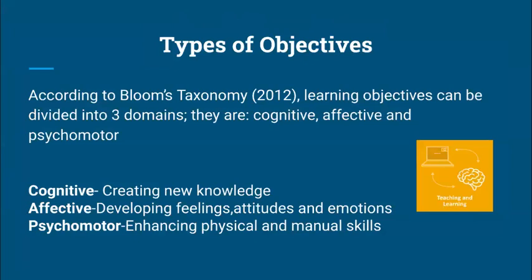According to Bloom's Taxonomy, learning objectives can be divided into three domains: the cognitive, the affective, and the psychomotor. When we talk about cognitive, we talk about the thinking process — anything having to do with knowledge. Affective is where you want students to develop a specific feeling, attitude, or emotion in the lesson. And psychomotor has to do with anything the students use their hands to do — they need to manipulate things, feel, touch — so you develop their fine motor skills. When writing objectives, make sure your objectives have cognitive, affective, and psychomotor targets.